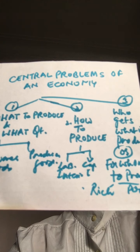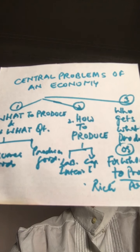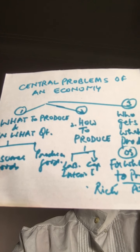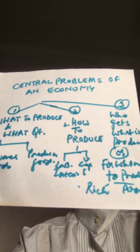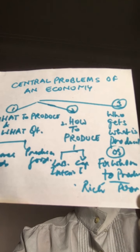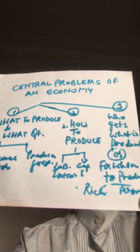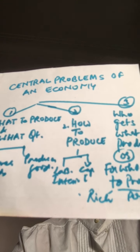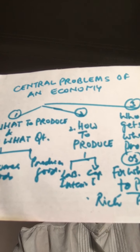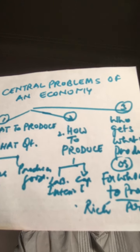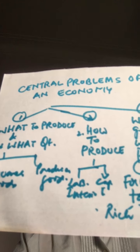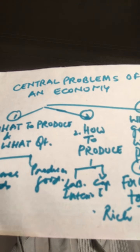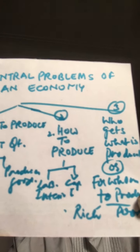The next problem is how to produce, which answers the question of the technique of production. It is concerned with the efficient use of resources, implying more production at less cost. There are two techniques: the labor-intensive technique, where more labor is used compared to capital, and the capital-intensive technique, where more capital is used compared to labor. The important thing is that productivity should be raised at the lowest possible cost.